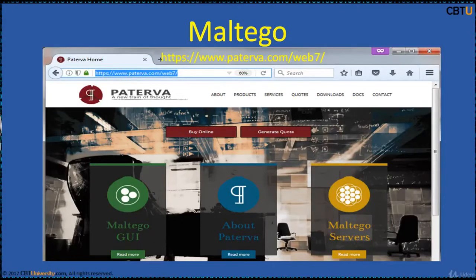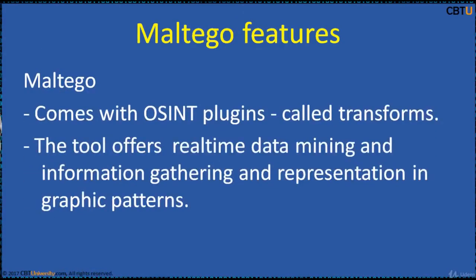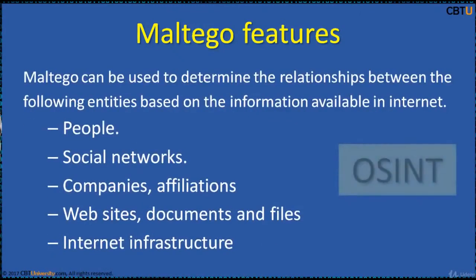We are going to explore the Paterva website about Maltego. Maltego comes with open source intelligence OSINT plugins called Transforms. The tool offers real-time data mining and information gathering and representation in graphic patterns. Maltego can be used for the information gathering phase of footprinting. Maltego will save your time and will allow you to work smartly. Maltego does footprinting of internet infrastructure as well as gathering information about people and organizations, analyzing the relations based on the information available on the internet.